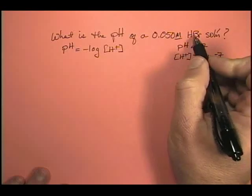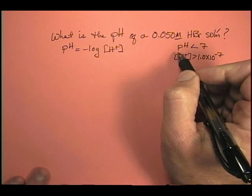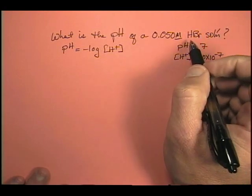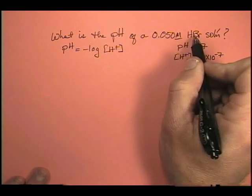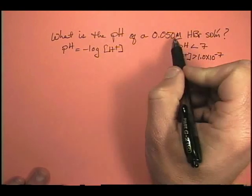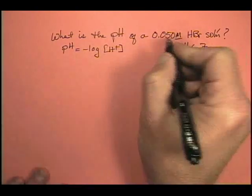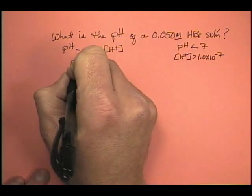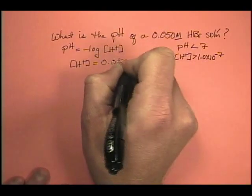Well, look at this. This is a monoprotic acid. In other words, one mole of hydrogen for every mole of HBr. So I know, and this is a strong acid. We're not going to mess with weak acids in this class. We know that the molarity of an acid is the molarity of its hydrogen ion. Once again, the molarity of the acid is the molarity of the hydrogen ion. So, in this case, if we have a 0.050 molar HBr solution, then we know that our hydrogen ion concentration is 0.050. How easy is that?